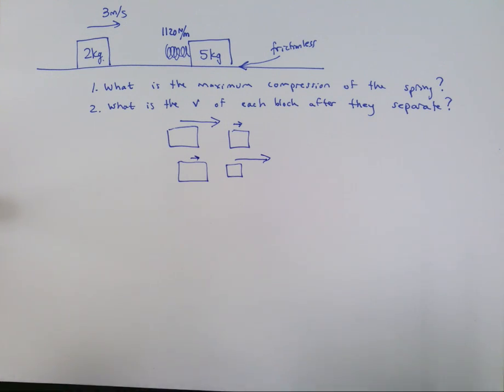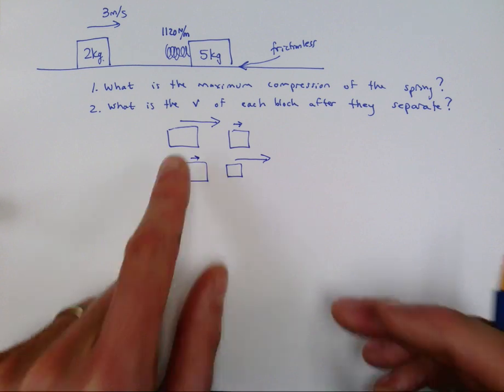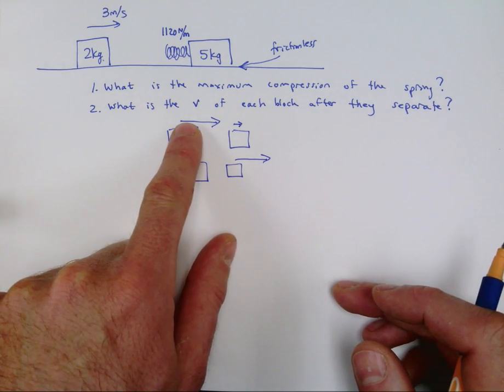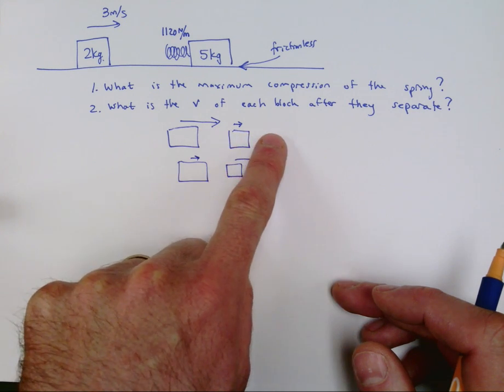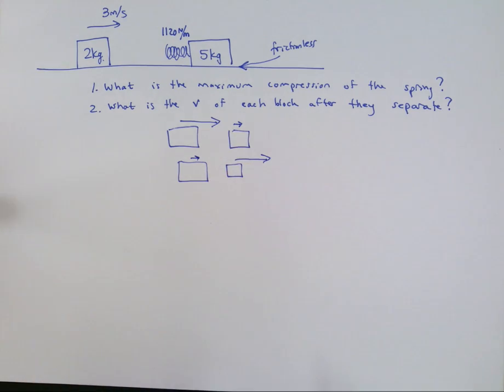So the moment that the spring is as compressed as it's ever going to be is as this speed in the back gets smaller and smaller and this speed in the front gets bigger and bigger. At some point those two speeds are equal to each other, and when the two speeds are equal to each other that's when the maximum compression occurs. So that's what we're going to solve for.